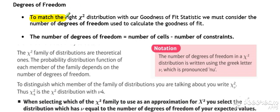So to match the right chi-square distribution with our goodness-of-fit statistic, we need to consider something called the degrees of freedom of the goodness-of-fit calculation. The number of degrees of freedom, for which we use this symbol here, pronounced as nu.